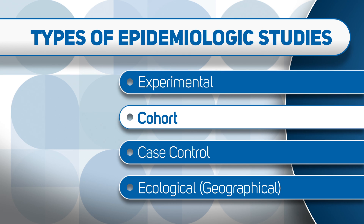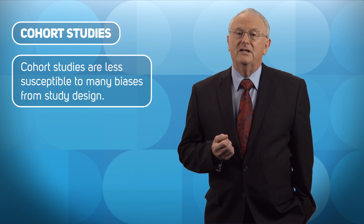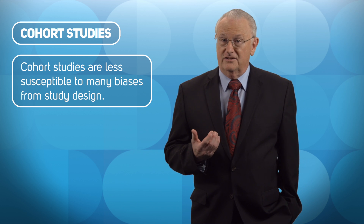Cohort studies, or follow-up studies, usually have the highest intrinsic quality of the observational studies. You start with a population that's exposed, and then follow them for the rest of their lives, or as long as possible. You seek to determine what cancers or diseases they develop. Exposures and doses are determined before the cancers have occurred, so they are least susceptible to many of the biases seen in other study designs.